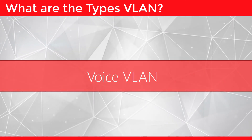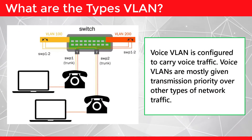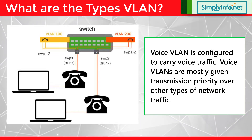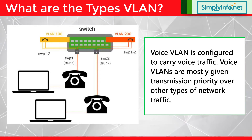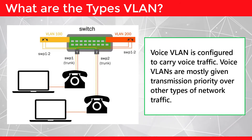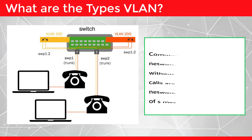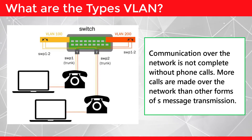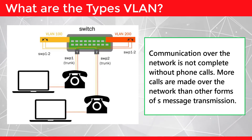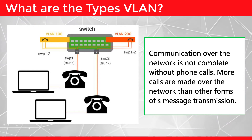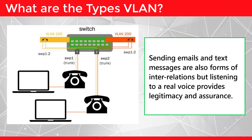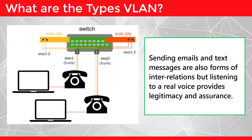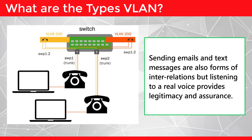Voice VLAN is configured to carry voice traffic. Voice VLANs are mostly given transmission priority over other types of network traffic. Communication over the network is not complete without phone calls. More calls are made over the network than other forms of message transmission. Sending emails and text messages are also forms of communication, but listening to a real voice provides legitimacy and assurance.